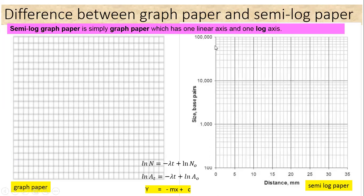On the semi-log paper, the y-axis is broken into cycles. For example, here there are three cycles: one to 1,000 is the first cycle, 1,000 to 10,000 is the second cycle, and 10,000 to 100,000 is the third cycle. So the y-axis is divided into cycles — this is the key difference between the conventional graph paper and the semi-log paper.